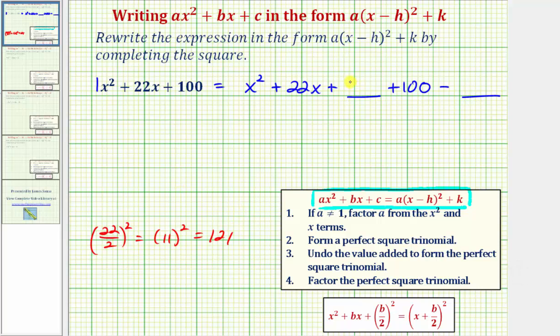So by adding 121 here we now have a perfect square trinomial and then step three we want to undo the value added to form the perfect square trinomial. So because we added 121 here we also need to subtract 121 here to maintain equality. Notice how this expression is still equal to x squared plus 22x plus 100.